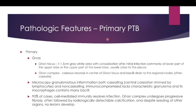For pathologic features of primary tuberculosis, the Ghon focus is grossly a 1 to 1.5 centimeter gray-white area of consolidation after initial infection, commonly at the lower part of the upper lobe or upper part of the lower lobe, close to the pleura. The Ghon complex shows caseous necrosis in the center of the Ghon focus, with bacilli draining to regional lymph nodes that often also show caseous necrosis — termed tuberculous lymphadenitis.